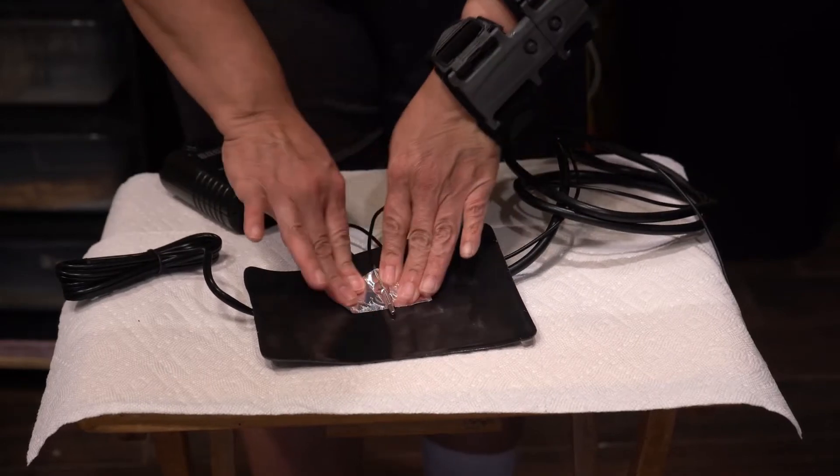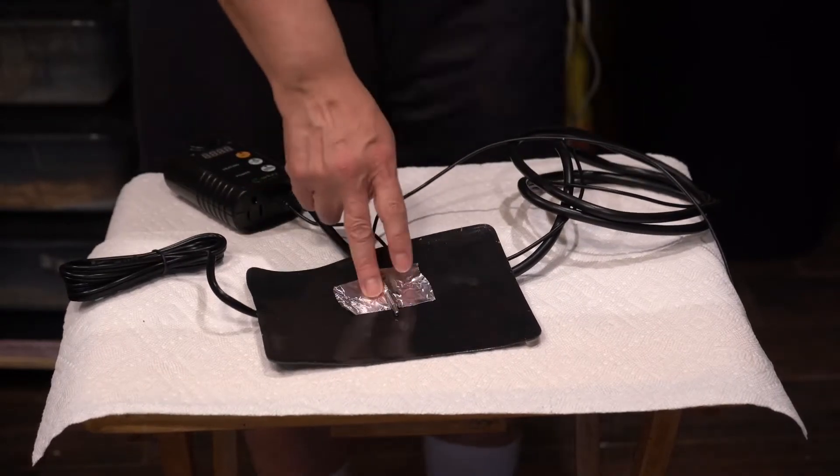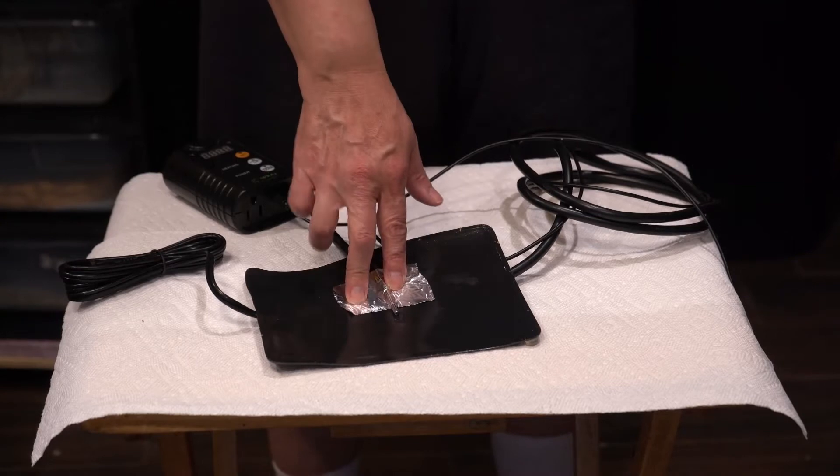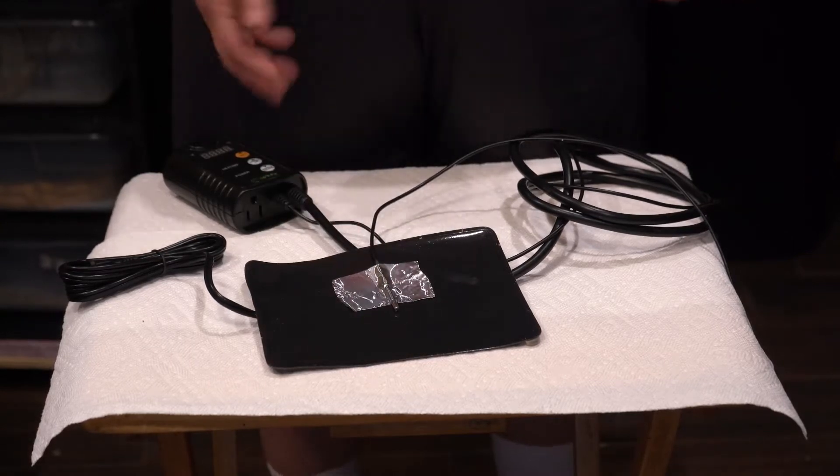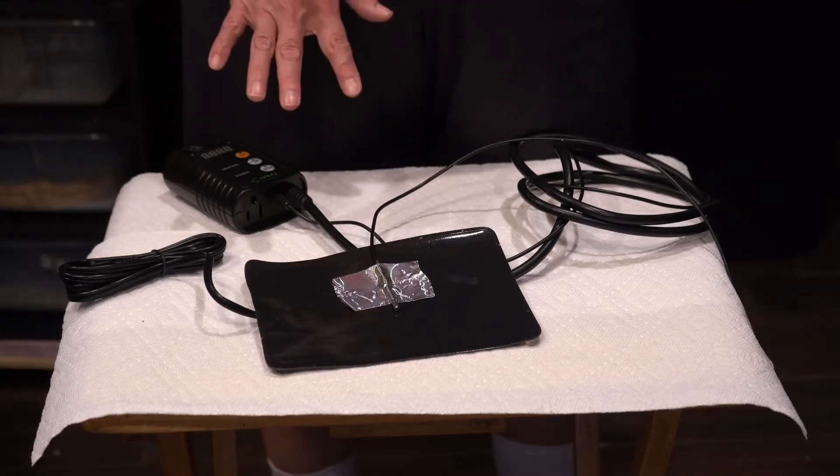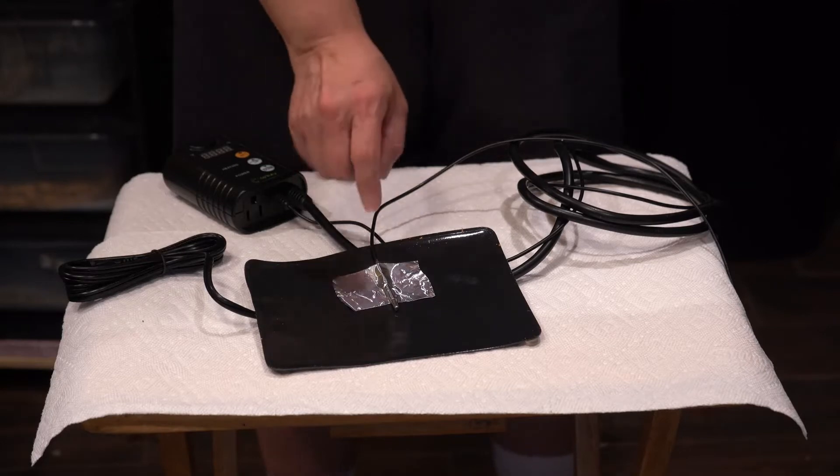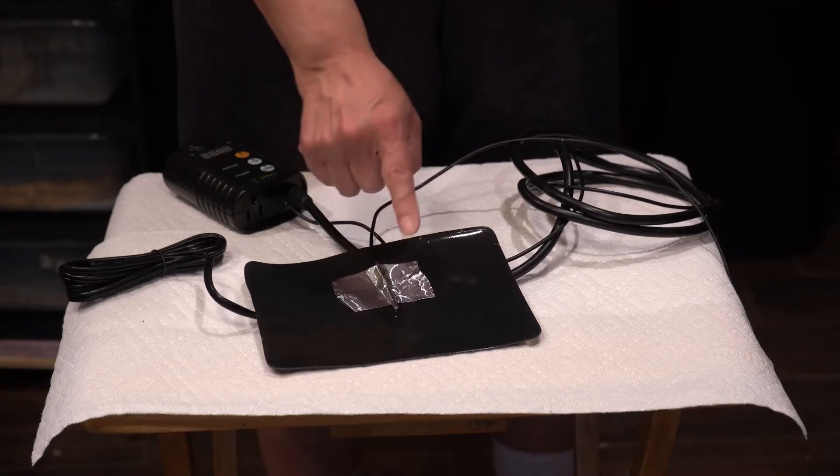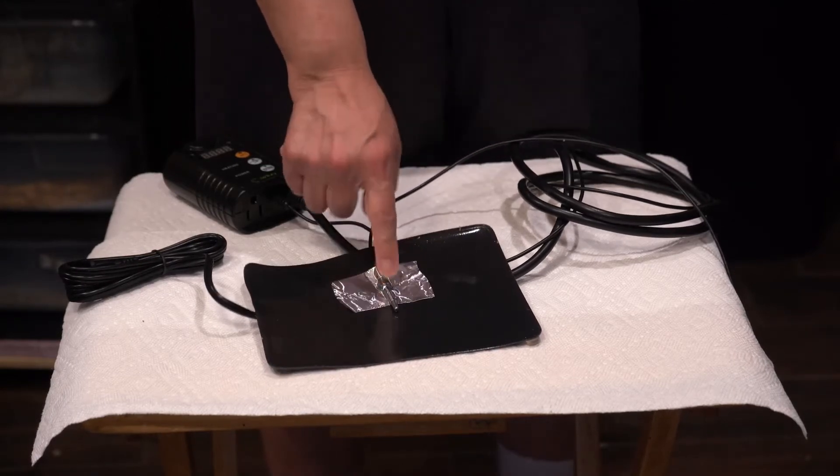You're just going to tape it down, just like that. The reason we tape it down is the silver tape, the foil tape, is not affected by heat, so the adhesive won't come off. You want to make sure your probe stays on your heat mat, because that's going to control how hot this mat gets.